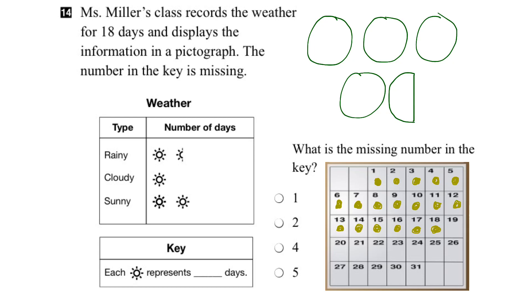What we can do is evenly distribute all of these days into our representation of the symbols. Let's start with day one — we'll take day one and move it up into the first circle. Then day two into the second circle, day three into the third, and day four into the fourth. Now when we get to day five, we can't put it all into the half circle, so let's go back and put it in our first circle, and keep filling up our full circles. Day six there, day seven there, day eight there.